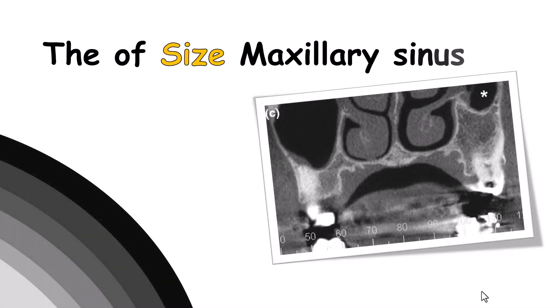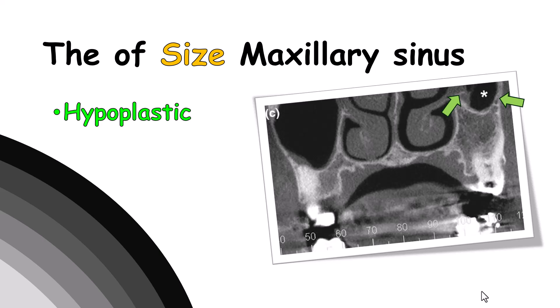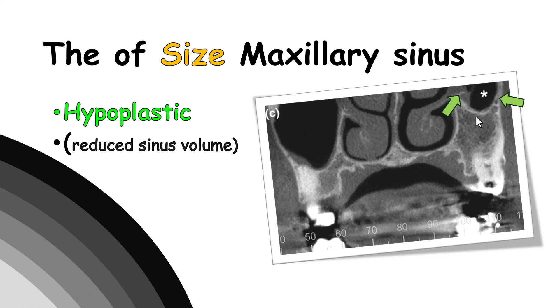Starting with anatomy, we have the size of the maxillary sinus. A hypoplastic sinus is a small sinus with a small volume — smaller than the normal size. It's not pathologic; it is an anatomical variation. It can be two-sided or one-sided. Usually, there is no problem for dental implant placement.